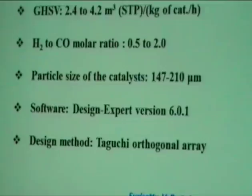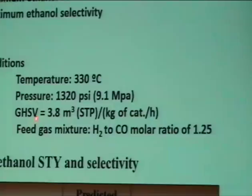After optimizing catalyst composition, we optimized reaction conditions — temperature, pressure, gas hourly space velocity, and H₂/CO ratio — to maximize ethanol space time yield and ethanol selectivity. The optimized conditions are: temperature 340°C, pressure 1320 PSI (9.1 MPa), and H₂/CO ratio of 1.25. The predicted and experimentally observed values are in good agreement at these conditions.